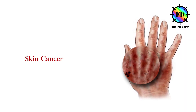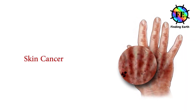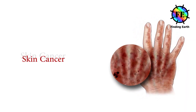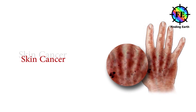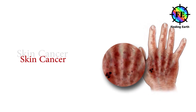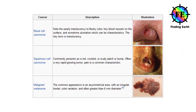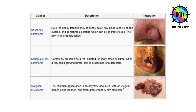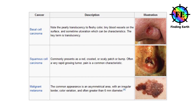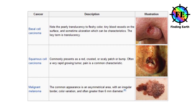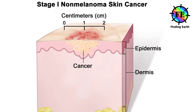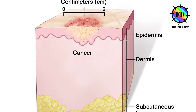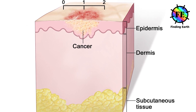Let us get to know about skin cancer. There are three major types of skin cancers: basal cell carcinoma, squamous cell carcinoma, and melanoma. The first two skin cancers are grouped together as non-melanoma skin cancers.